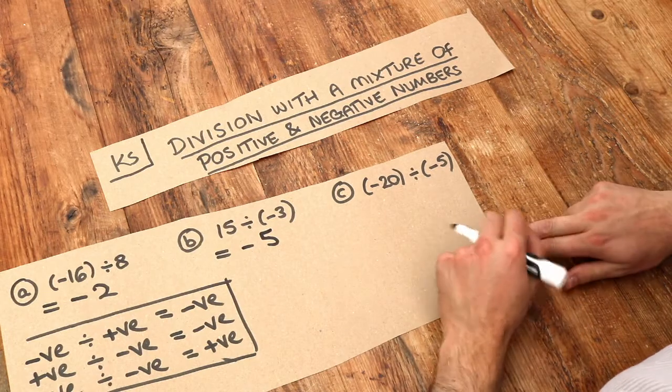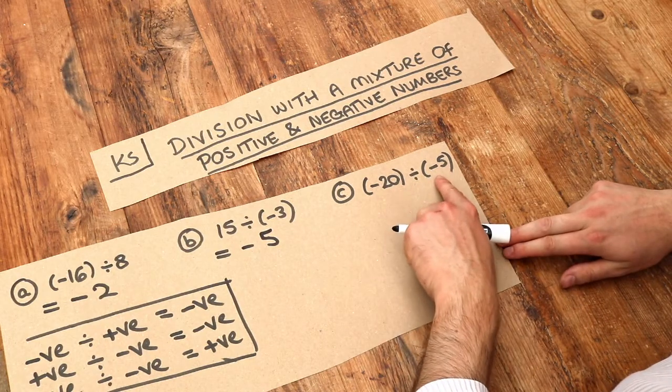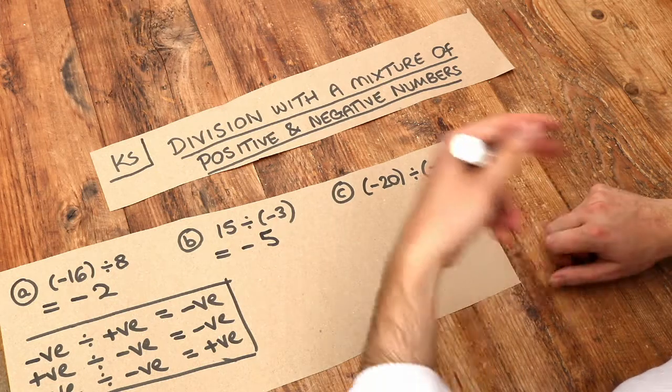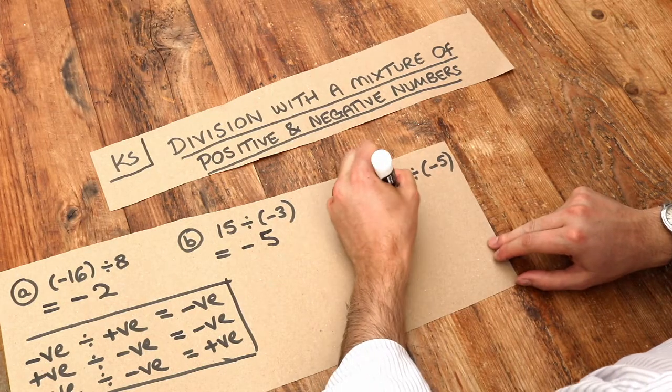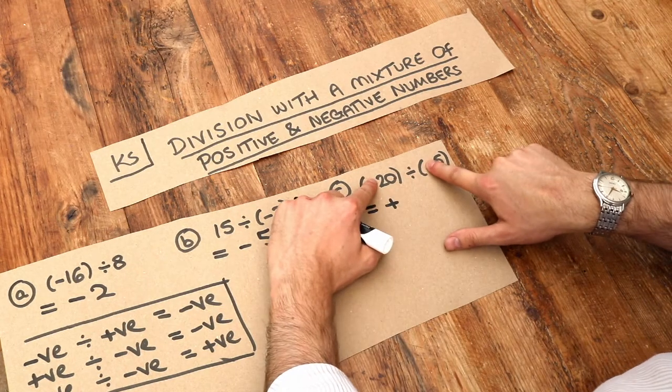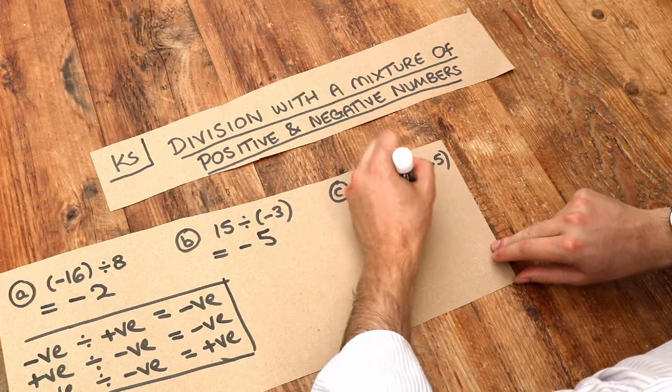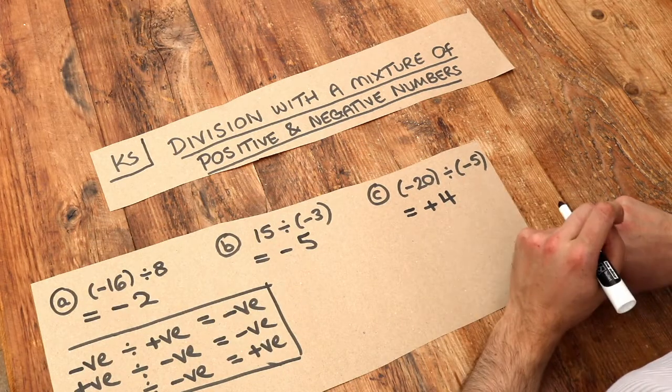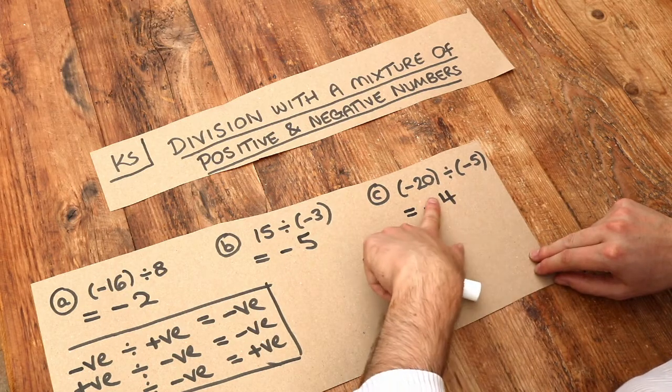And finally, we've got minus 20 divided by minus 5. They're both negative this time, and therefore we end up with a positive number. You don't need to put that plus. Let's forget the signs now. What is 20 divided by 5? It's 4. So minus 20 divided by minus 5 is positive 4. As I said, that plus is not necessary.